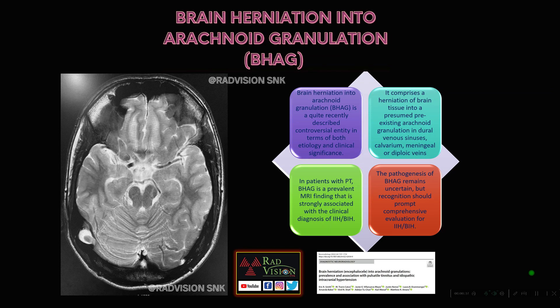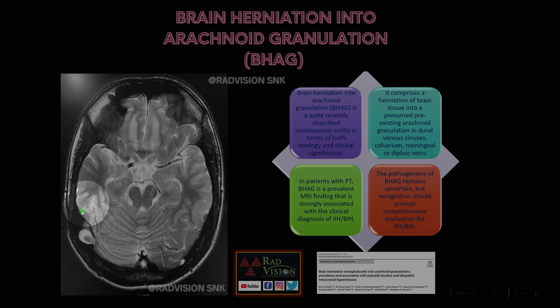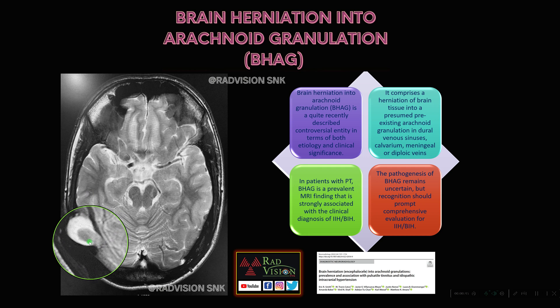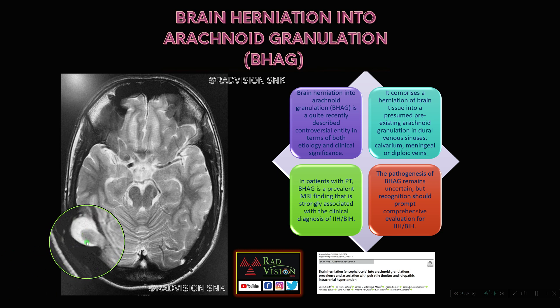Coming to the first case — this is a very rare entity. Most people may not know this. This is called BHAG — that is brain herniation into arachnoid granulation. Here you can see herniation of the cerebellar tissue into the arachnoid granulation. This commonly occurs at the level of dural venous sinuses, calvarium, meningeal or diploic veins. In a patient with pulsatile tinnitus, brain herniation into arachnoid granulation definitely gives a clinical diagnosis of benign intracranial hypertension. So whenever you see BHAG with pulsatile tinnitus, definitely rule out benign intracranial hypertension.